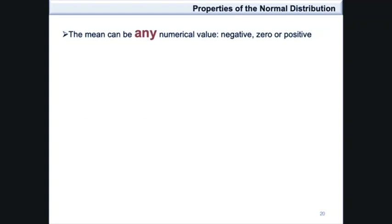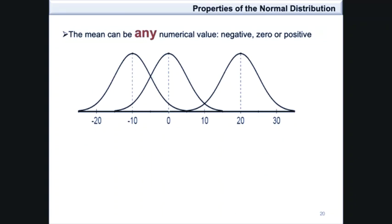The mean can be any numerical value. It can be negative, 0, or positive. As can be seen on the following graphs, the first graph is centered around negative 10, so the mean is negative 10. The second is centered around 0, therefore the mean is 0, and the final graph has a mean of 20.